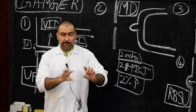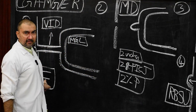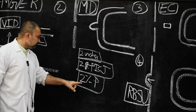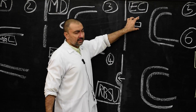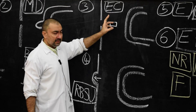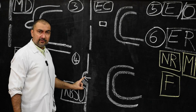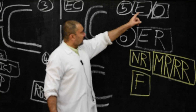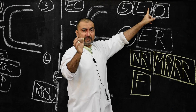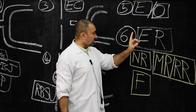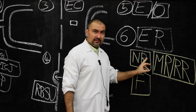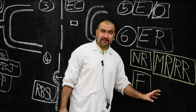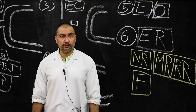To summarize: the first anomaly was complete patent vitelo-intestinal duct — umbilical fecal fistula. Second was persistent proximal part of VID — Meckel's diverticulum. Third was persistent middle part of VID — enterocystoma. Fourth was persistent distal segment of VID — raspberry red swelling. Fifth was non-reduction of physiological umbilical hernia — exomphalos or omphalocele. Sixth were errors of rotation including non-rotation, mal-rotation or reverse rotation, and errors of fixation. Thank you very much.